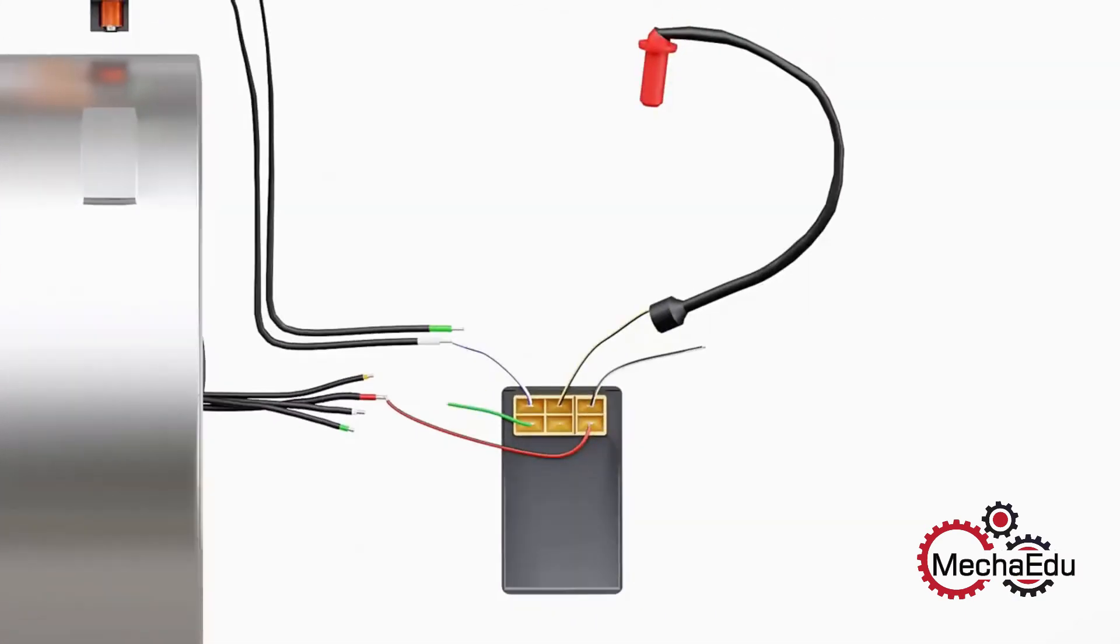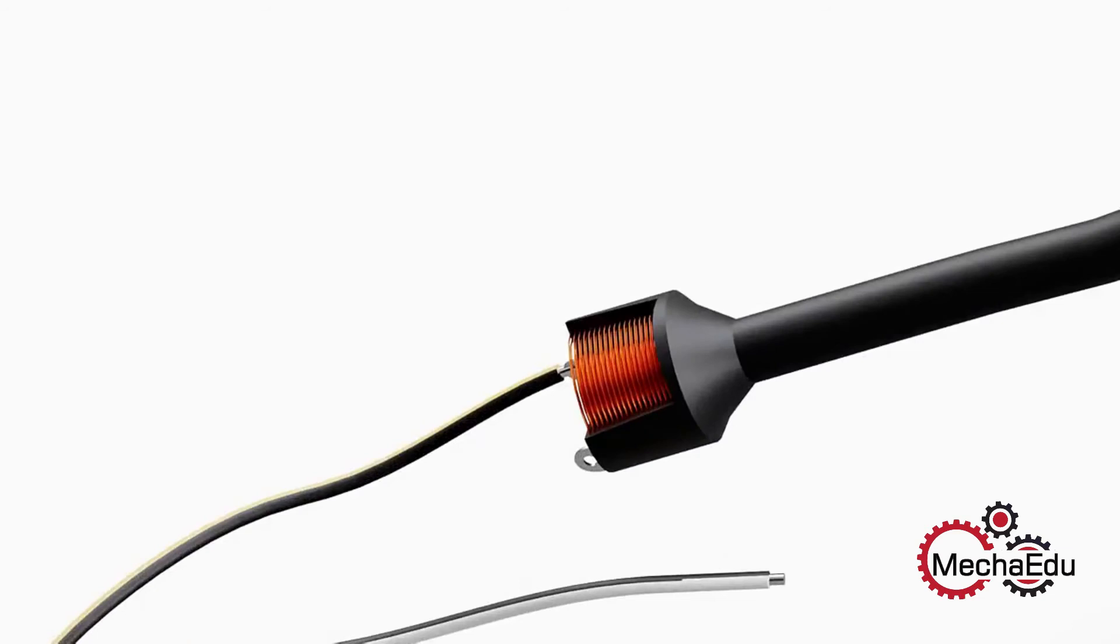To increase the voltage further, an ignition coil is used. The ignition coil is a step-up transformer, which increases voltage up to 200 times the input voltage, which is sufficient to fire the spark plug.